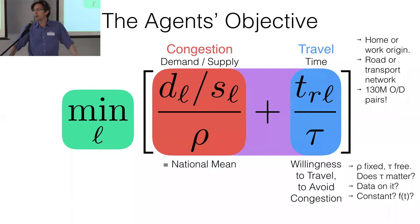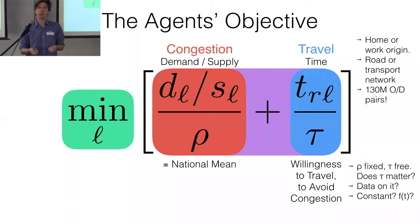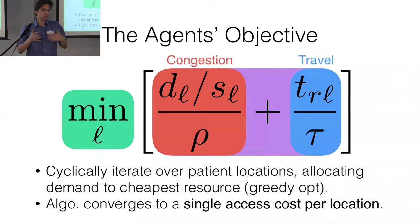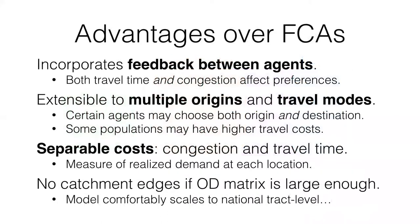Rho and tau could be scaled together without affecting the minimization, so we fix rho and tau is a free parameter. We know people want a doctor within half an hour or an hour of them, but that's different from saying how they value the trade-off between commute and congestion. We show that for identifying places with shortages, the choice of tau matters relatively little. The algorithm cyclically iterates over patient locations, allocating demand from the most expensive resource to the cheapest available one, converging when there is no cheaper option available.